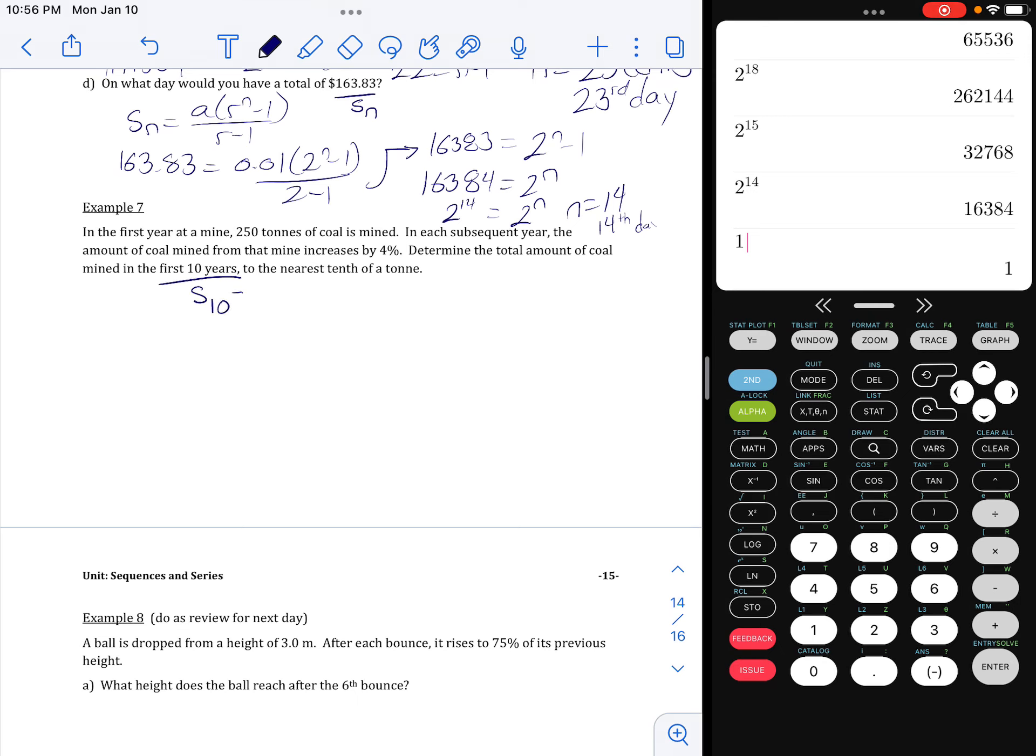All right, so we're looking for the total amounts of coal. So we're looking for S10. We don't know how much coal is mined on the tenth year. So let's use this formula.